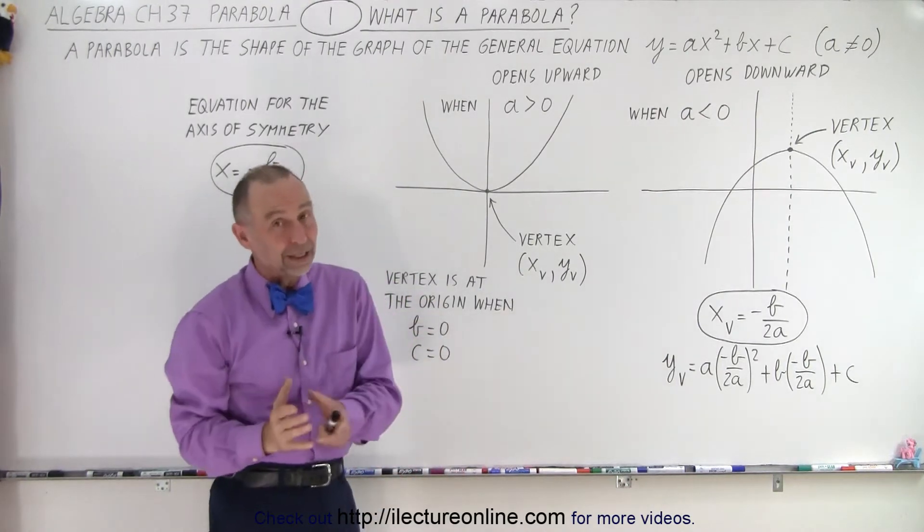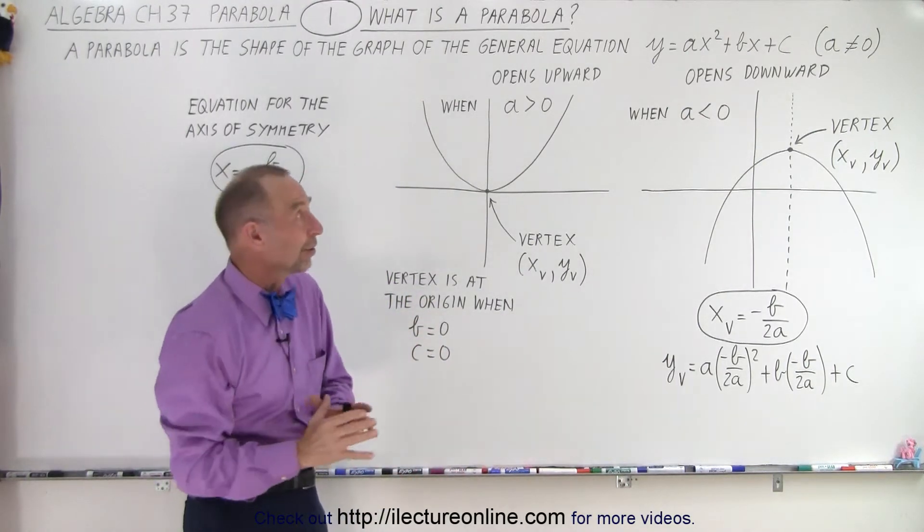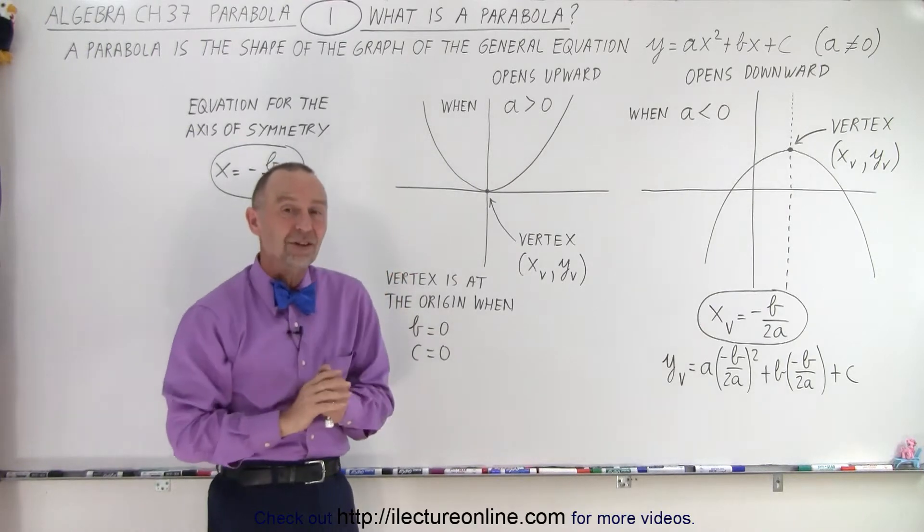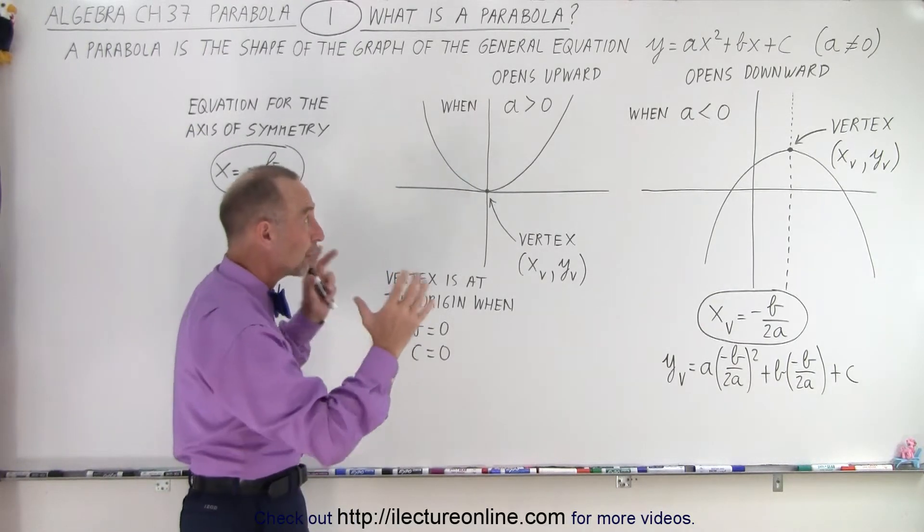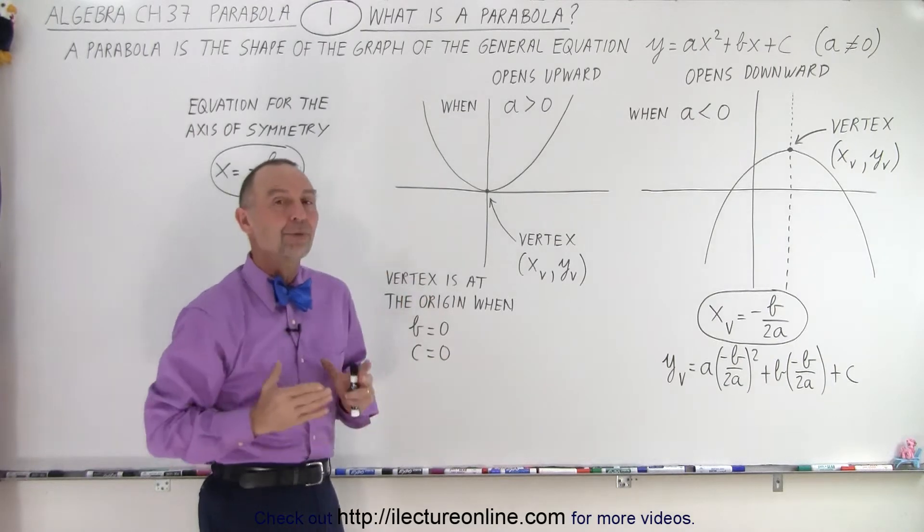Now, b could be zero, c could be zero, they could both be zero. As long as a is not zero, you have a quadratic equation, and when you draw a graph, it looks like a parabola.